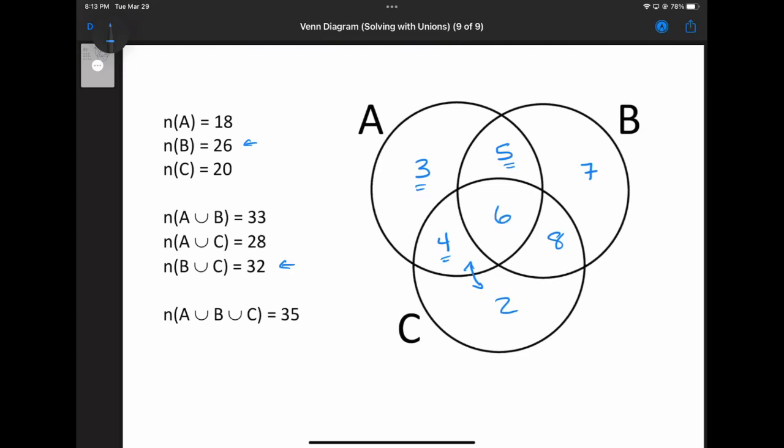And now we can do a quick double check. We should have 26 in B. Well, that's seven plus eight is 15, plus five is 20, plus the middle is 26. And then our four numbers inside of C should total 20. We have four plus six is 10, plus eight is 18, plus two is 20. So it seems to work.